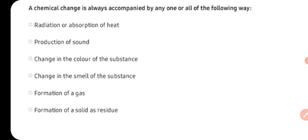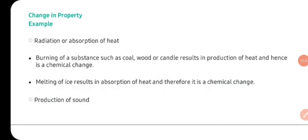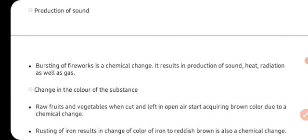Yahan par hum chemical change mein jo kisi substance ki property mein jo changes aate hai unka example dekhenge. Jaisi ki radiation or absorption of heat — heat ka absorption hona ya nikalna. Jaisi ki aap coal, wood ya candle ko jalaate hai, to inko jalaane ke liye aapko heat ki requirement hoti hai. Aur jab yeh ek baar chemical reactions hone lagta hai — jab yeh coal, wood ya candle burn hone lagta hai — to aap dekhti hai ki ismein se heat energy ka formation hota hai. Melting of ice results in absorption of heat, and therefore it is a chemical change. Koyi jo burf hai jab woh pighalti hai, to woh heat ko absorb karti hai.